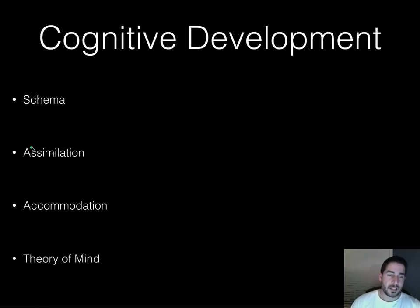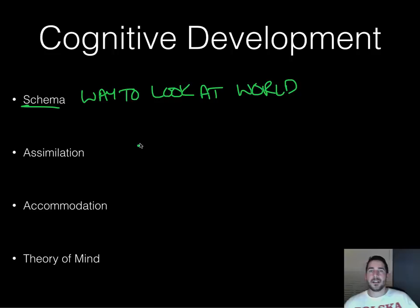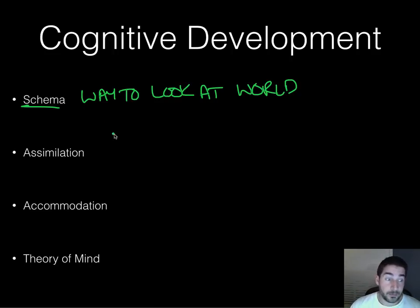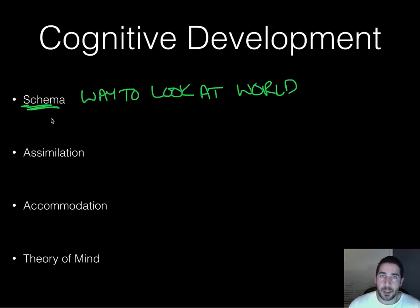As kids are learning, they develop things called schemas — a schema is just a way to look at the world, like the tools you have to make sense of it. If you had a certain set of tools and were asked to build a house, you'd try to build it using those tools. That's your schema — the lens you're looking through your situation with. Kids take the information they know and try to make sense of the world around them using that information.